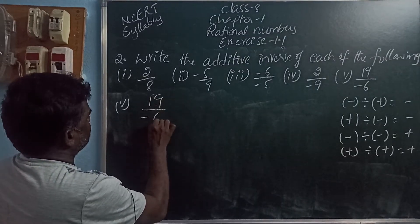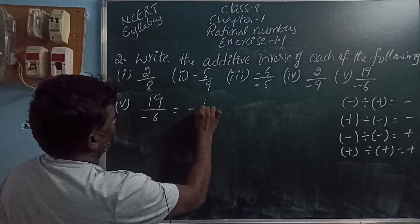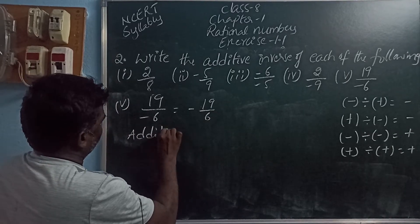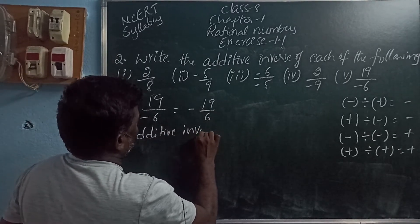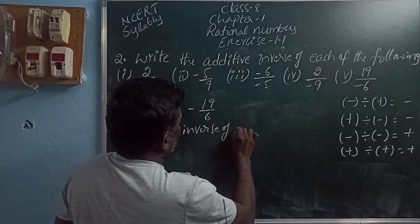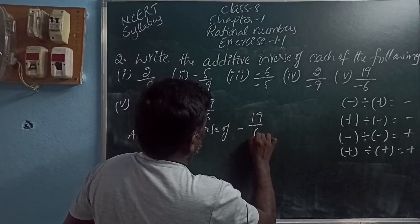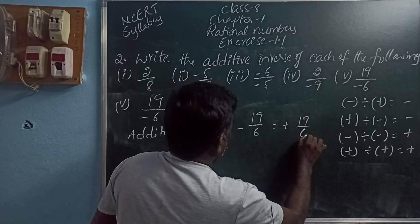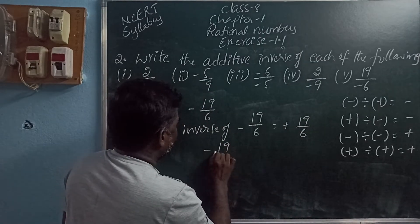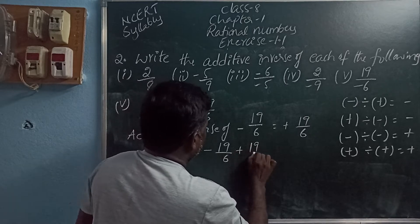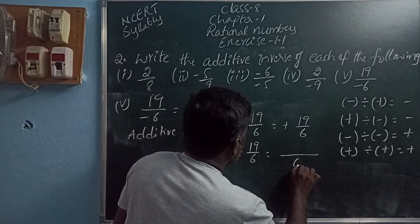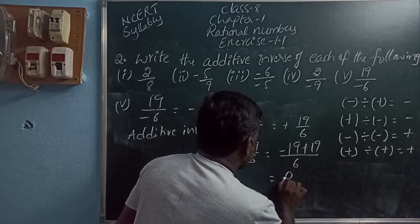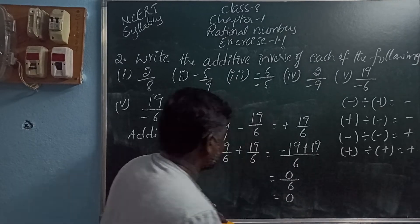19 by minus 6. Plus by minus gives minus 19 by 6. The additive inverse of minus 19 by 6 is plus 19 by 6. Adding: minus 19 by 6 plus 19 by 6. The common denominator is 6. Minus 19 plus 19 is 0. 0 by 6 is 0. Zero by anything is zero.